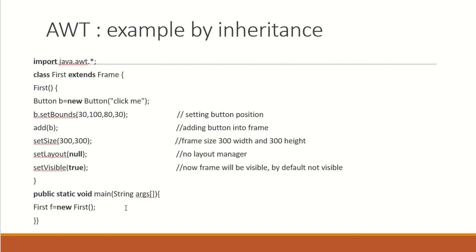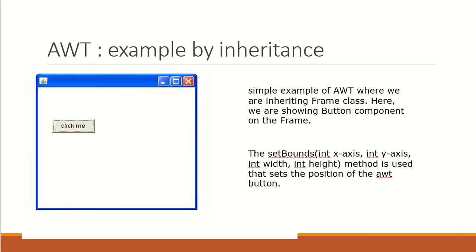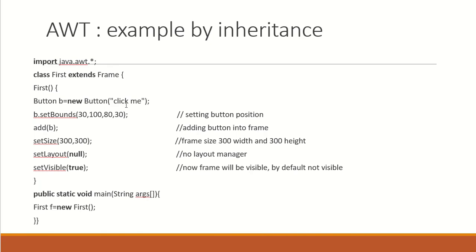This method adds the button into the frame. Then you are setting the size of your frame, setting the layout manager. If you have a particular layout manager - like a template - you can add it here; if not, you can set it as null. Then set visibility - you have to set this container as visible so that others can view it in the output. In the main method, you are creating an object of your class. The output shows the button starting at coordinates 30, 100 with an 80-pixel length and 30-pixel width, with the text 'click me'.